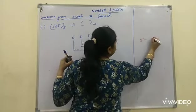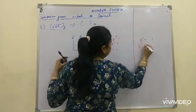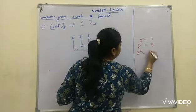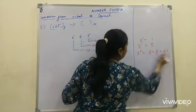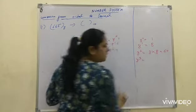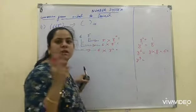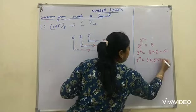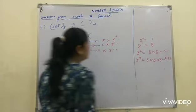So, 8 to the power 0 is what? 1. 8 to the power 1 is what? 8. 8 to the power 2 is what? 8 into 8 it is 64. 8 to the power 3 means we will multiply 8 three times: 8 into 8 into 8 that is 512.